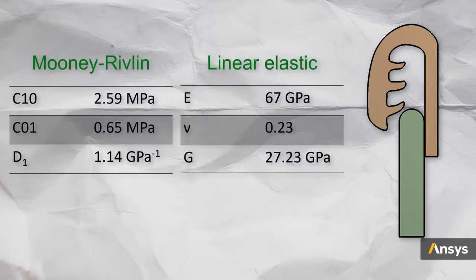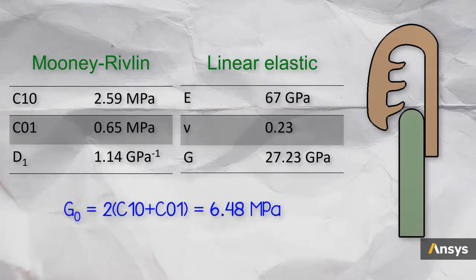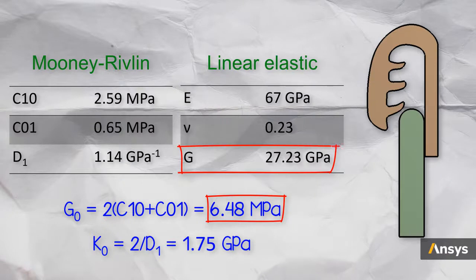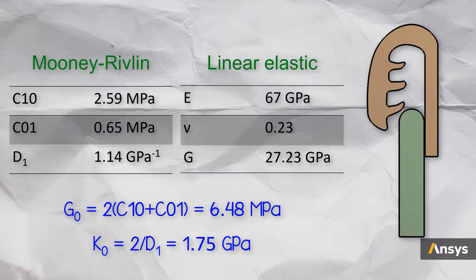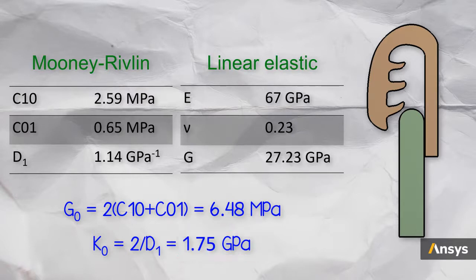Here are the material properties for both materials. The initial shear and bulk modulus for the gasket can be calculated from its material constants. We can see how soft the material is in comparison to the glass material based on their shear modulus. The bulk modulus of the rubber, however, is very large because the rubber is nearly incompressible, so it will offer a lot of resistance to change in volume.